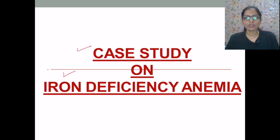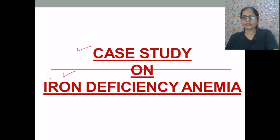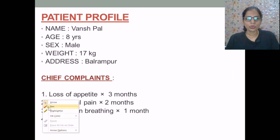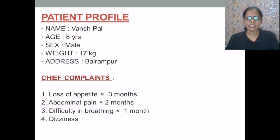This is a case of iron deficiency anemia in an 8-year-old male child. Here is the patient profile. The name of the patient is Vanshpal, he is an 8-year-old male child, and the current weight of the child is 17 kg.